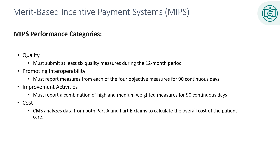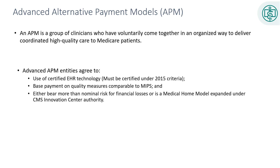The goal of the Cost performance category is to create efficiencies in Medicare spending. Cost measures assess a patient's total cost of care during the year, during a hospital stay, or during certain episodes of care. Advanced Alternative Payment Models, also known as APMs, include bundled payments for care improvement advanced, comprehensive end-stage renal disease care, comprehensive primary care plus, and others. MIPS eligible clinicians who are on the participation list of one or more advanced APMs during a determination period, also known as a snapshot, are not required to report MIPS data. They may also qualify for a five percent incentive if they achieve threshold levels. Snapshot dates are March 31st, June 30th, and August 31st.